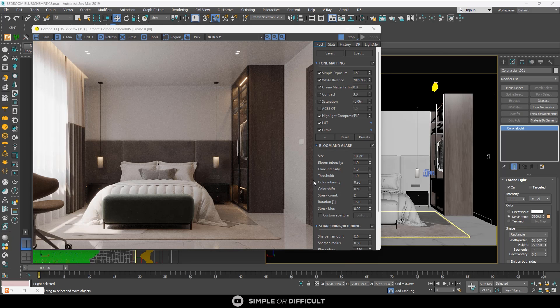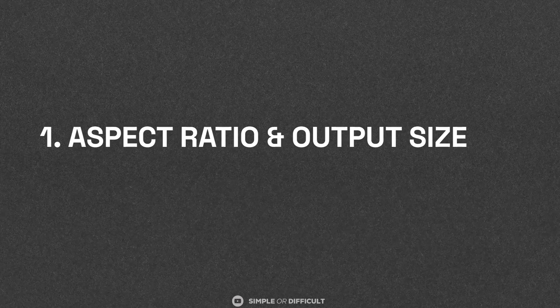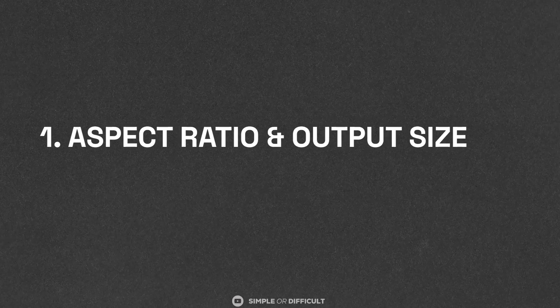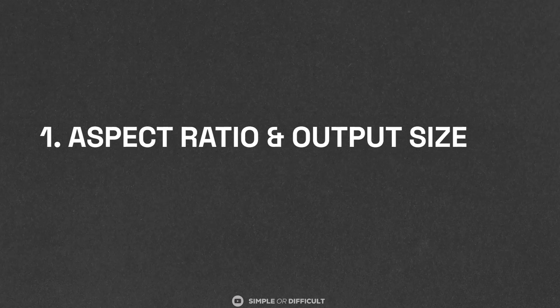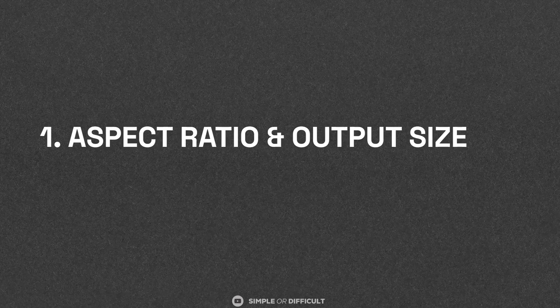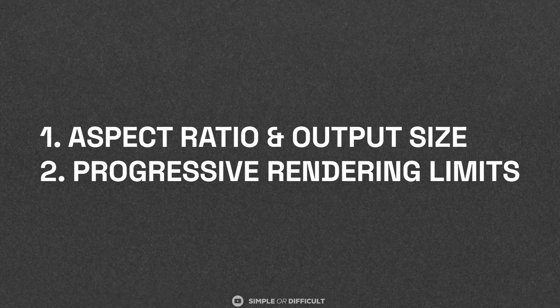This is very helpful when you want to sleep while rendering. To set this up, there are two things to keep in mind: the first one is output size — that's aspect ratio and output size — and the second one is progressive rendering limits.